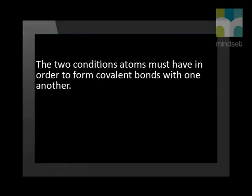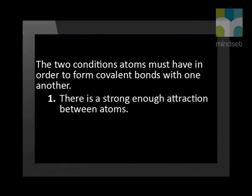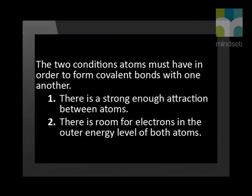Can you think of two conditions atoms must have in order to form covalent bonds with one another? There must be a strong enough attraction between atoms, and there must be room for electrons in the outer energy level of both atoms.